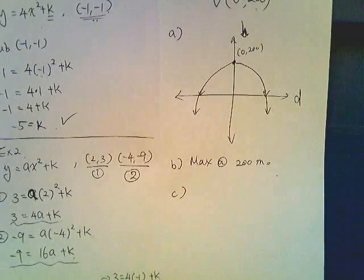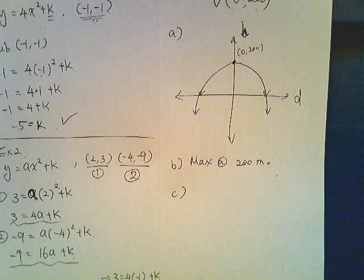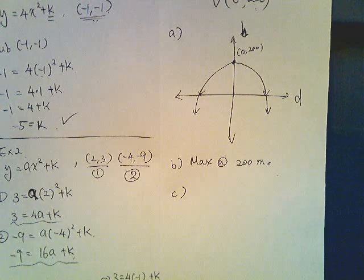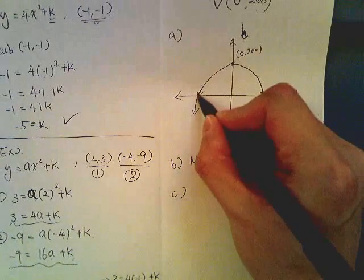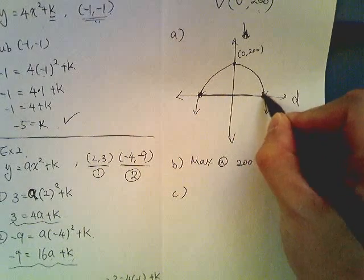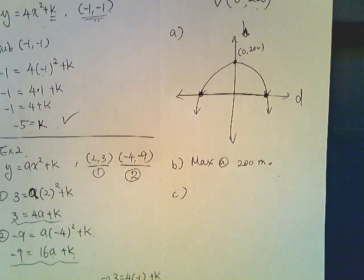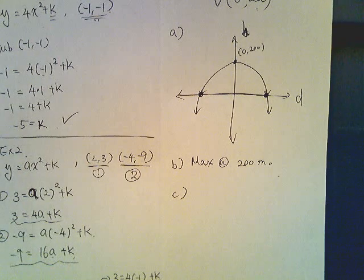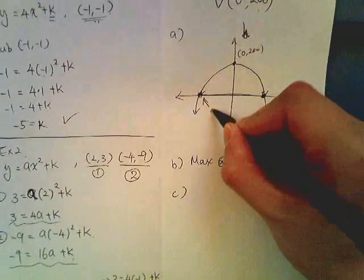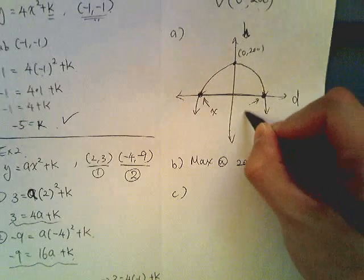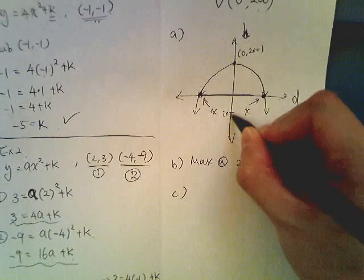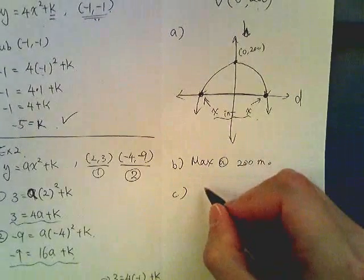Now then c. Now c is kind of tricky part. It says find the approximate width of the arch. So the width is from here to here since it's not really digging into the ground. The problem is how do I find these? Now hopefully you recognize these are the x-intercepts.